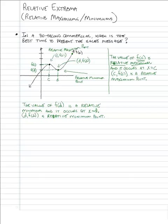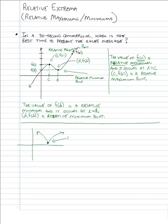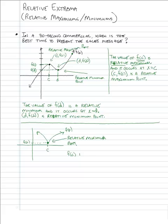Let's look at another example. If we had a graph that maybe looked like this — and we've seen graphs that kind of look like this — then this position is a relative minimum point. But we would need to know the y value to know what the relative minimum is. It has some x value c, and then the corresponding y value. This is a graph of f of x, so f of c, the y value, is the relative minimum.